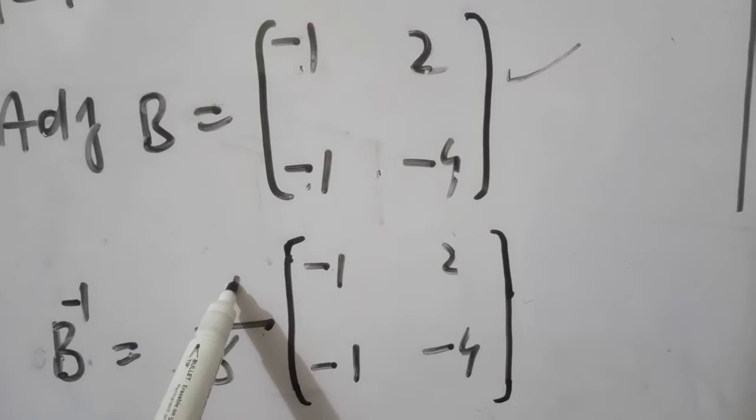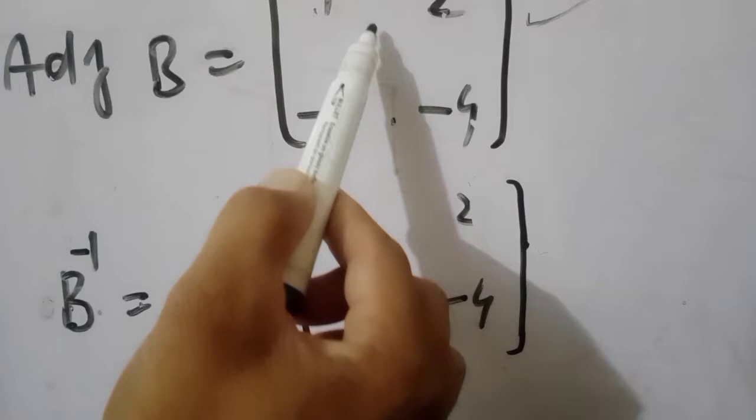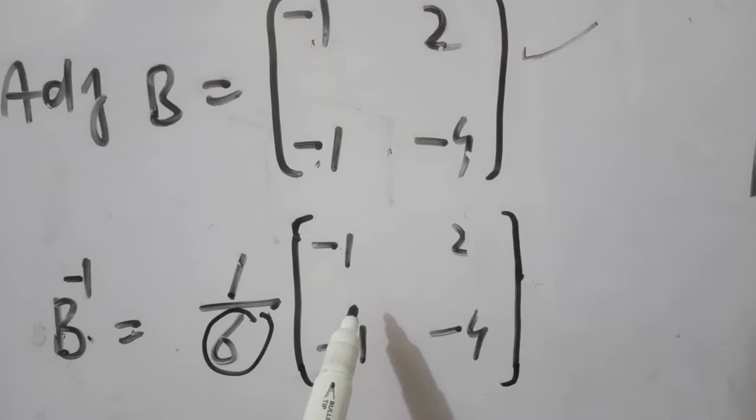Dear students यह adjoint B निकला। तो B inverse equal to 1 over det(B)। Formula में det(B) होता है — det(B) हमने निकाला था 6 — आगे adjoint B भी हमने find किया। यह put कर दिया तो B inverse की value हमारे पास होगी।